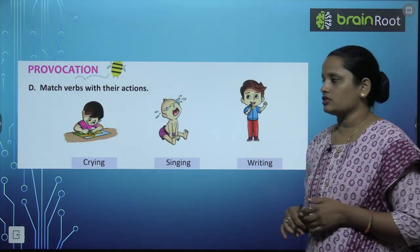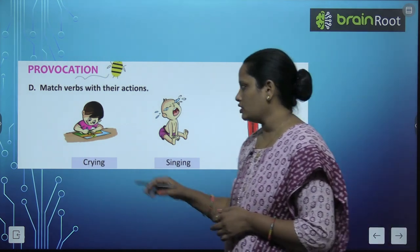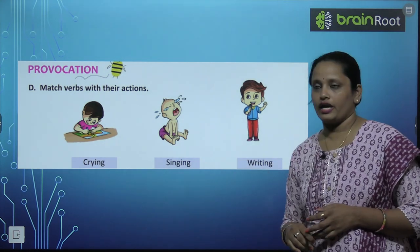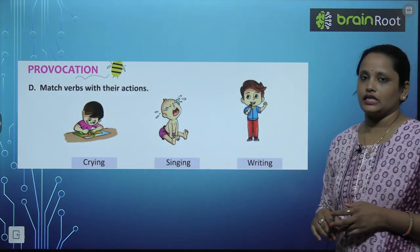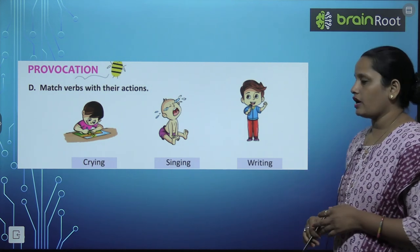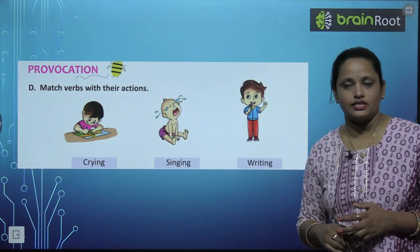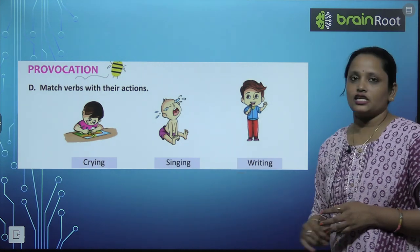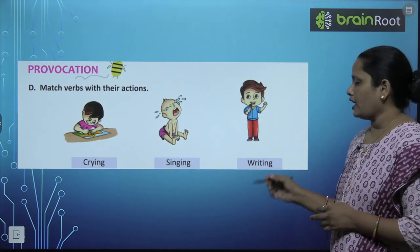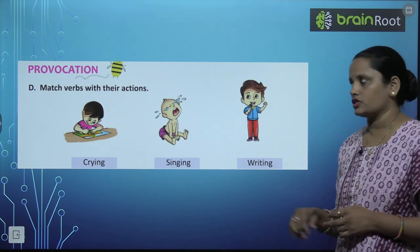Next — match the verbs with their actions. Verbs ko unke actions ke saath match karna hai. Pehla bachcha kuch draw kar raha hai. Doosra bachcha ro raha hai. Teesra bachcha sing kar raha hai. Toh jaldi se bataiye — kahan likha hai crying? C-R-Y-I-N-G, crying means rona. Kaun ro raha hai? Next is singing — kaun sing kar raha hai? And the last one is writing — kaun likh raha hai? Jaldi se match kar dijiye.